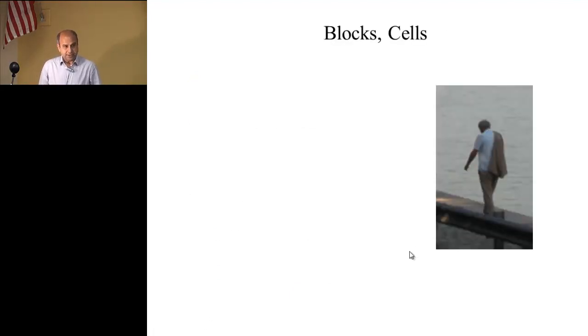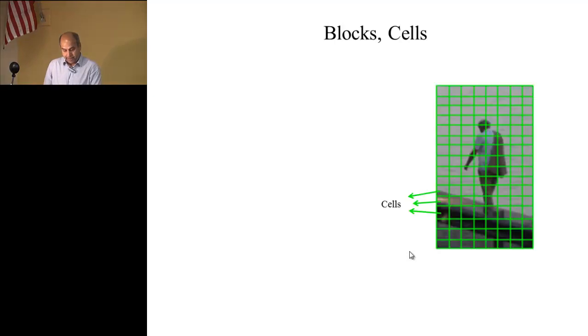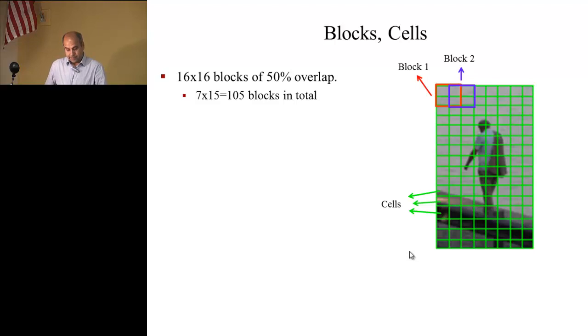Let's say this is the 64 by 128 image, and we divide these in cells. We will take a block which will be a 2x2 from these cells, so that will be a first block. Then next block will be a 50% overlap, will be a block like that. We have 16x16 blocks, each block is 16x16, and we will have seven blocks in this direction: first block here, second block here, third block here, fourth, fifth, sixth, and seventh block.